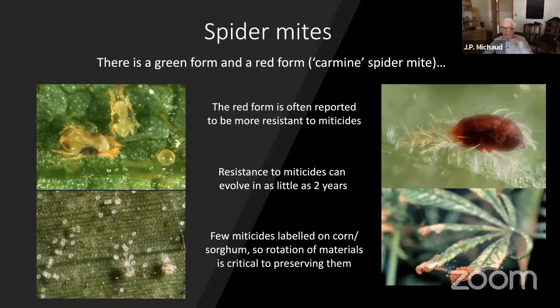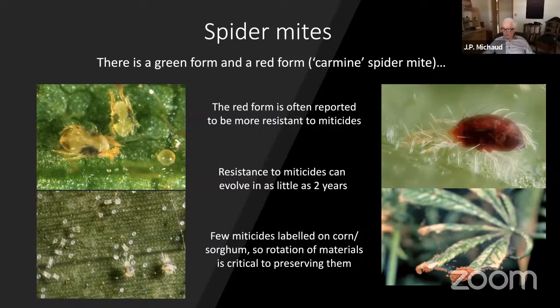There are two forms of spider mites — a red form and a green form — and both have been showing up. I used to think they were two different species, but they're not. There's anecdotal evidence that the red form tends to be more resistant to miticides, though that hasn't been fully quantified. There's a lot of variation between mite populations with respect to resistance, whether red or green. Resistance to miticides can evolve in as little as two years, and we don't have a lot of miticides registered, so it's really important to rotate materials if you have to treat for them, and you may well have to treat more than once.